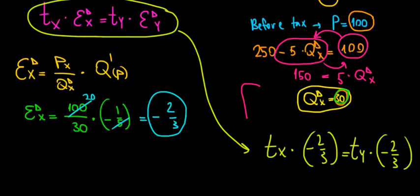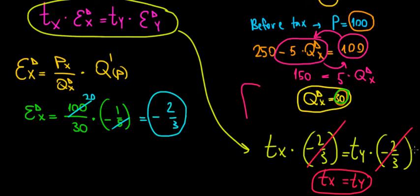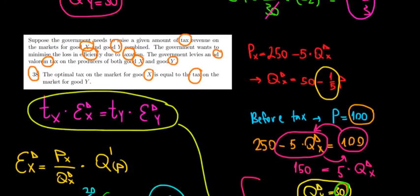If we cancel out the minus 2 over 3s because they are equal, then we're left with tax on good X equals tax on good Y. And that's what the question says. The optimal tax on the market of good X is equal to the tax on the market for good Y. That's true, and we are done.